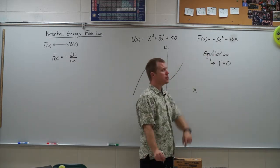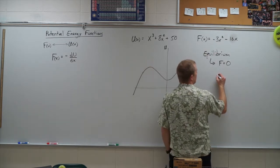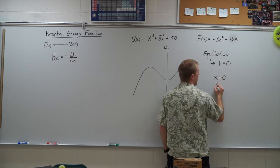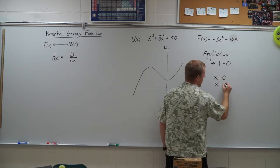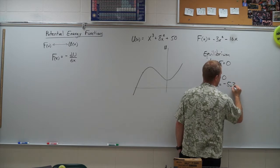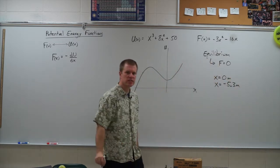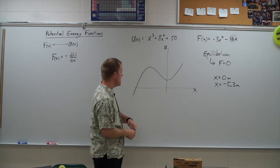and so I end up with something like x equals zero and x equals negative 5.3 meters. These are the two locations where the slope is zero.